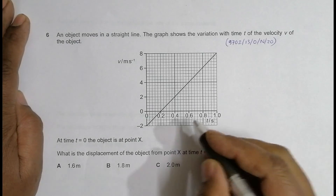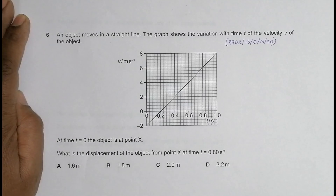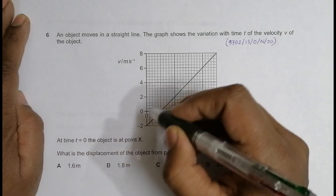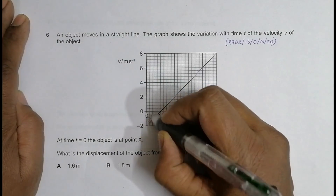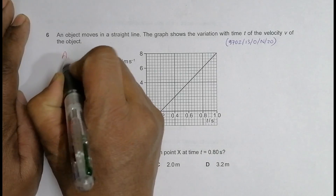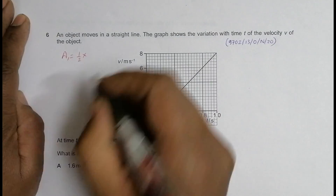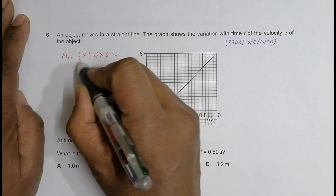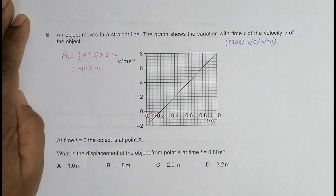Displacement is given by the area under the v-t graph. The first area A1 covers from 0 to 0.2 seconds — it is a right-angle triangle — so A1 = ½ × (−2) × 0.2 = −0.2 meters. Since the velocity is negative here, the displacement is also negative.